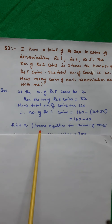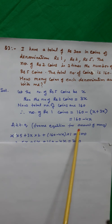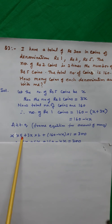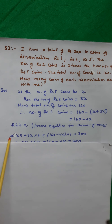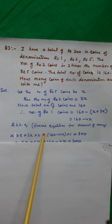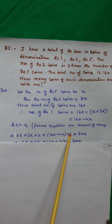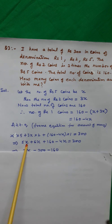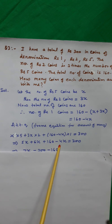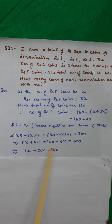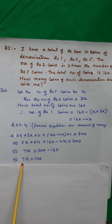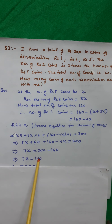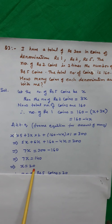Now, according to the question, the amount 300 comes from: 5 × (number of 5-rupee coins) plus 2 × (number of 2-rupee coins) plus 1 × (number of 1-rupee coins) equal to 300. This implies 5x plus 6x plus (160 minus 4x) equals 300. This implies 7x equals 300 minus 160, so 7x equals 140, giving x equal to 20.